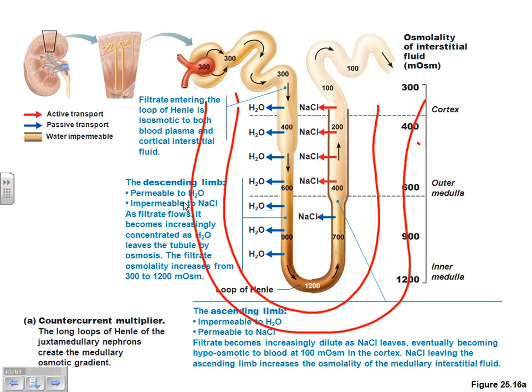We're going to look at what's going on one at a time and then see how it goes together. In the loop of Henle, this number 300 represents the osmolarity — at this point, I've got a lot of water in here, plus a lot of other stuff. After we leave the PCT, when we get to the descending limb of the loop of Henle — that's the thin side — water is freely permeable. That means it can leave the descending limb. What have we done to this blood? We took everything out of the PCT and put it in our blood.